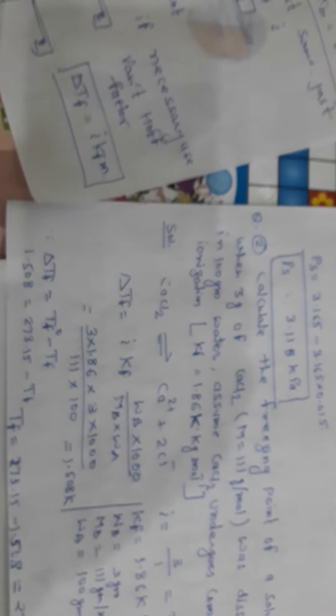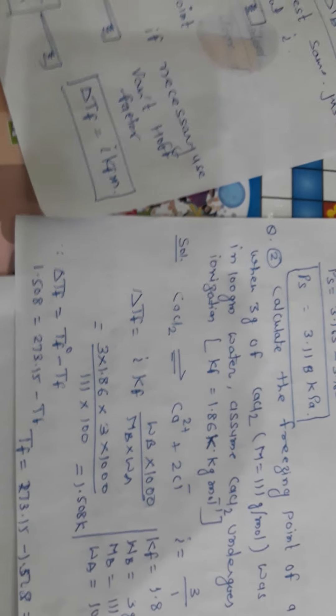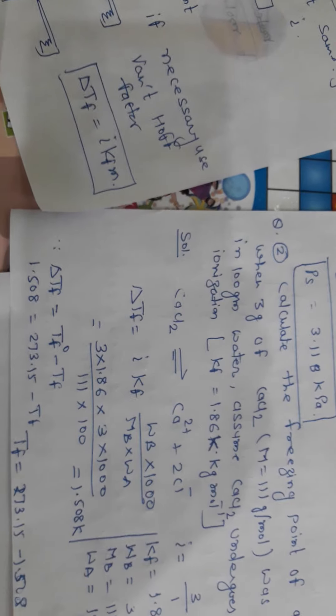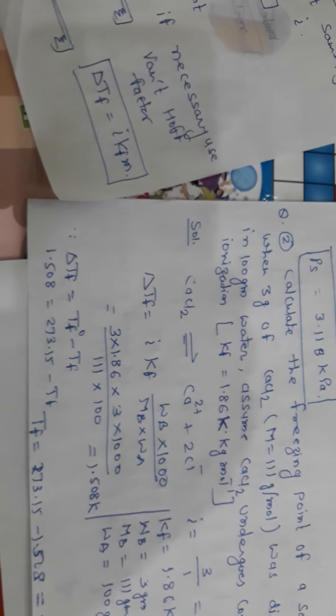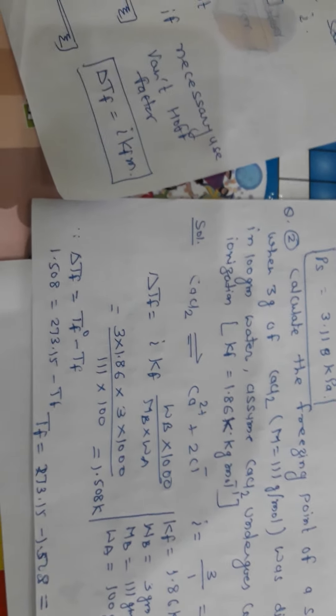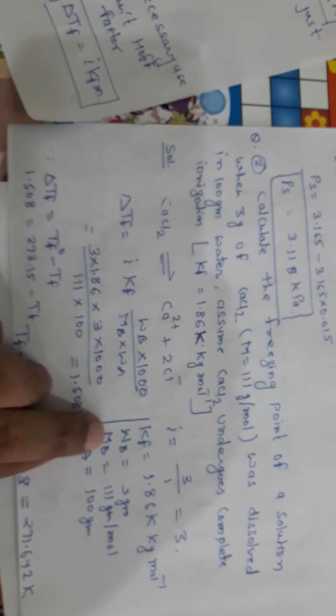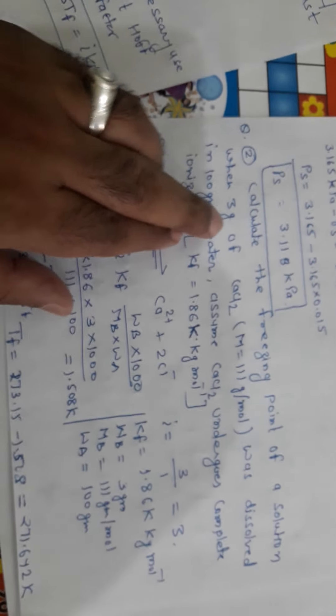Now we have to find out the ΔTf. ΔTf is the depression in freezing point. Depression in freezing point can be found out by using I equals Kf. Kf is the cryoscopic constant into Wb into 1000 upon Mb into Wa. The value of Kf is given 1.86 Kelvin kg mole inverse. Wb, gram weight of the solute, it is 3 gram.